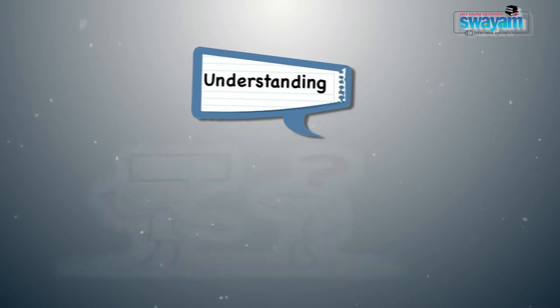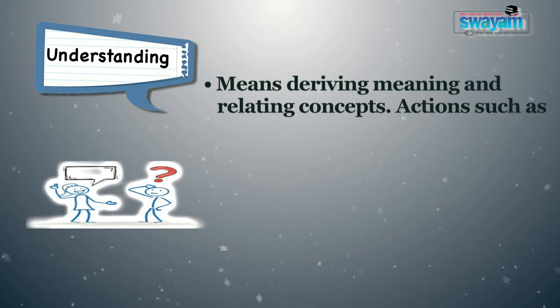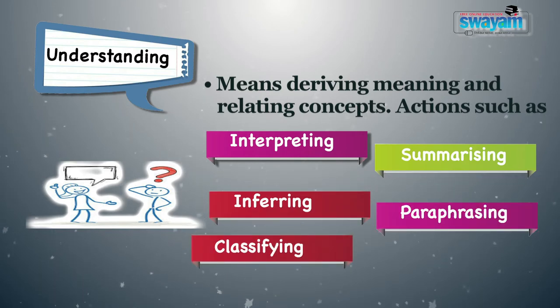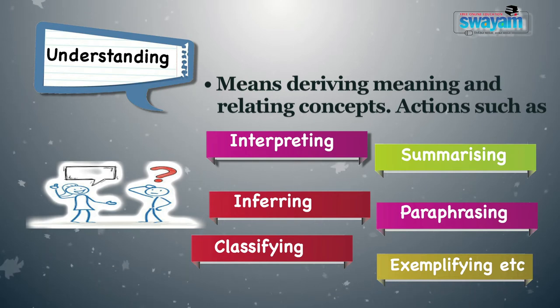Understanding is the second level in Digital Bloom's Taxonomy, implying deriving meaning and relating concepts. Actions such as interpreting, summarizing, inferring, paraphrasing, reading, classifying, and exemplifying are related to this level. These activities enable students to link similar concepts, construct meanings — whether figurative, verbal, or graphic — and filter unnecessary information from the plethora available in the digital world. Other digital activities at this level include advanced searches, commenting, annotating, generating, and discussing.